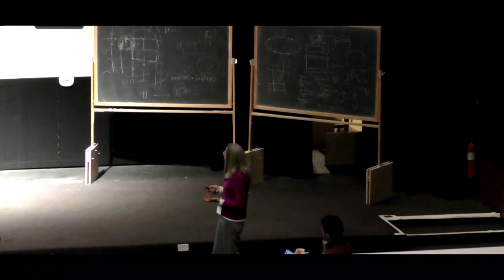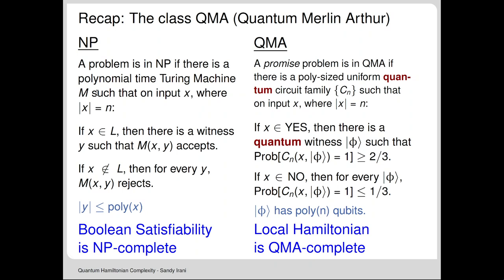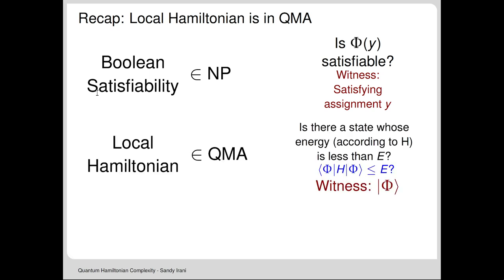We've seen the class NP and the corresponding quantum version QMA. In QMA, these problems are efficiently verified by a quantum computer with a quantum witness. As we talked about, you can boost those probabilities arbitrarily close to zero and one. For the classical counterpart, Boolean satisfiability is in NP. Local Hamiltonian is in QMA—the witness is the ground state itself. You hand me a state, and using a quantum computer, I can measure the energy with high probability.